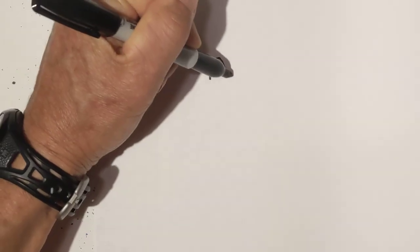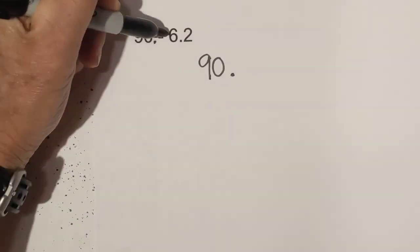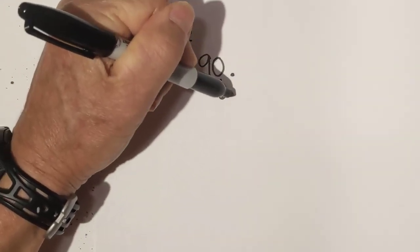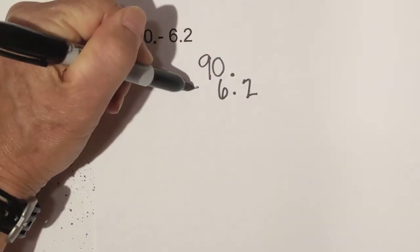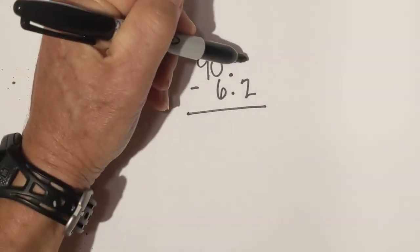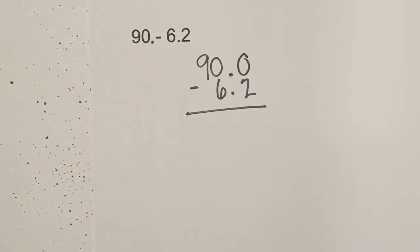We have 90. Let's write the decimal point and then line up the decimal point for 6.2. We're subtracting this time, and we're going to add another zero placeholder.